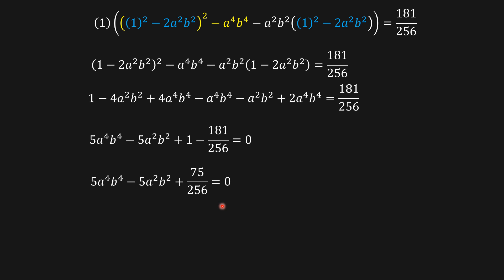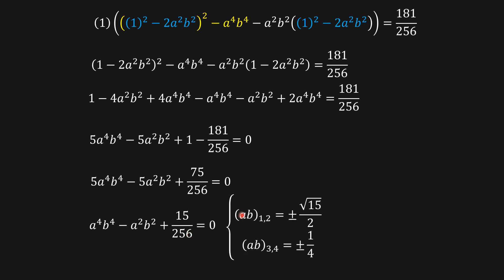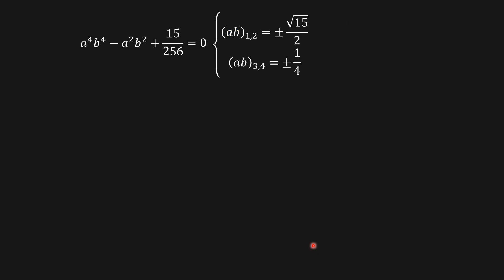This is a quadratic equation in terms of ab. Solving it, we get: ab₁ equals plus or minus square root of 15 divided by 2, and ab₂ equals plus or minus one over four. From here we have to remember the condition we stated at the beginning.